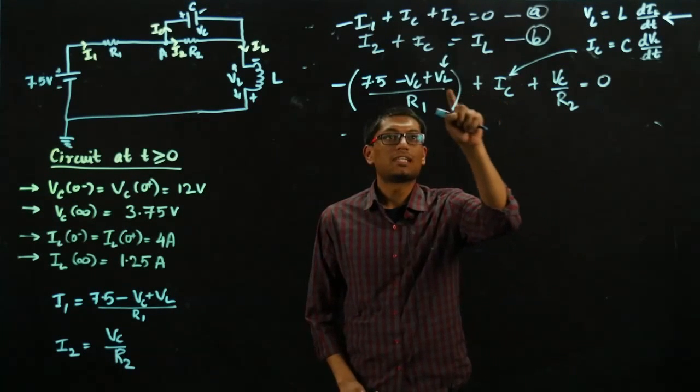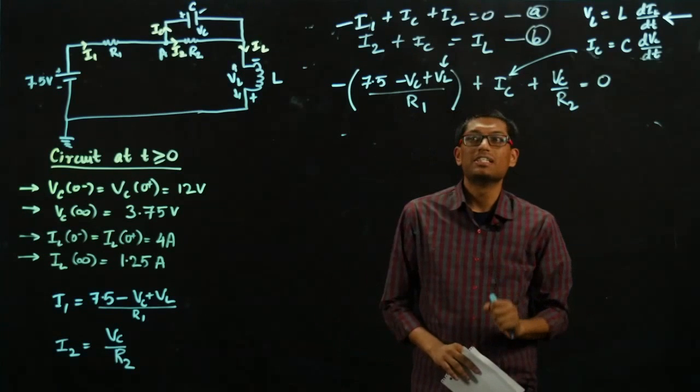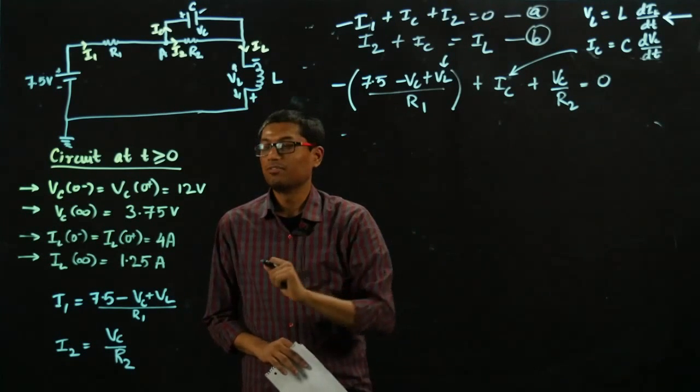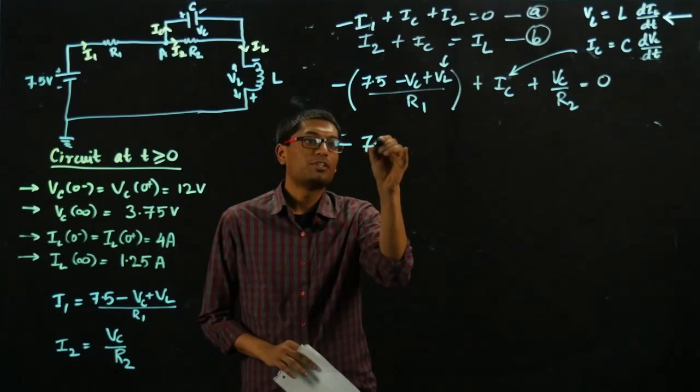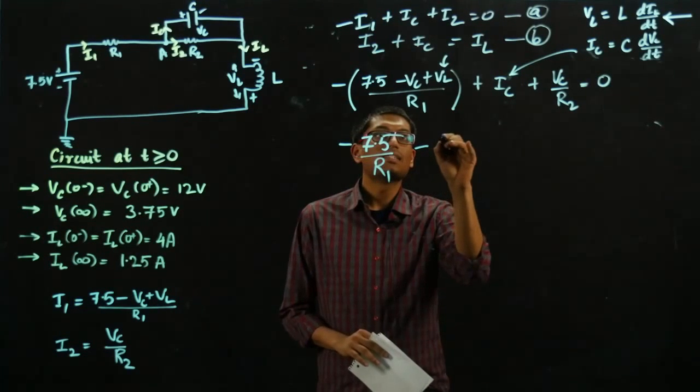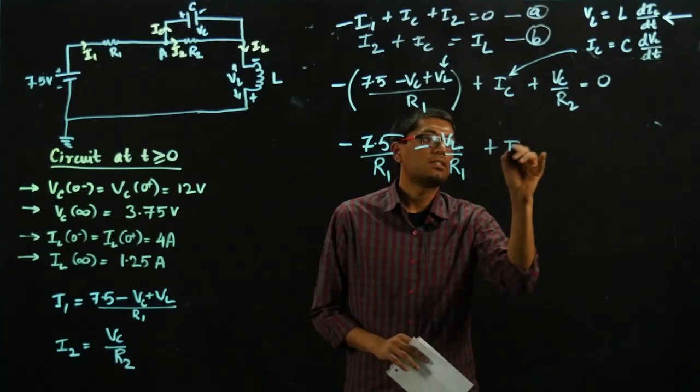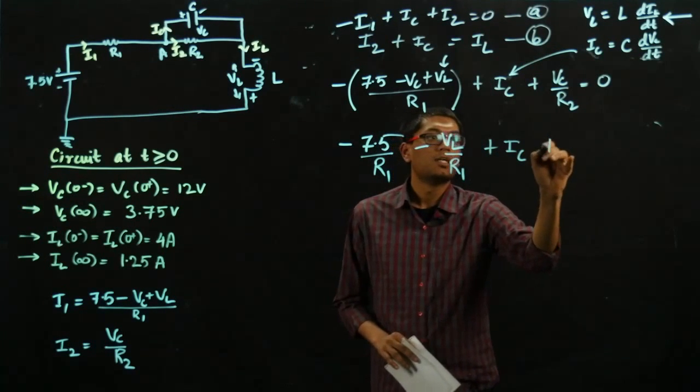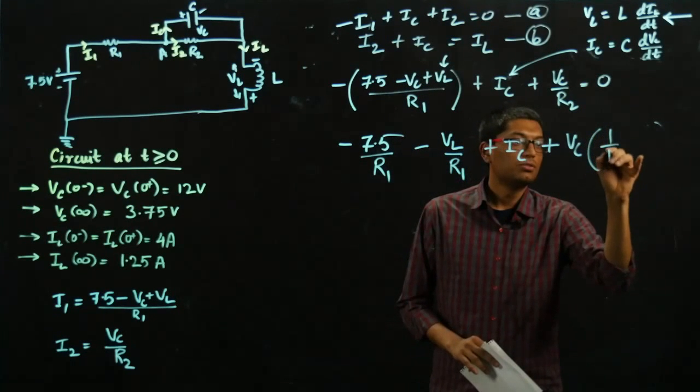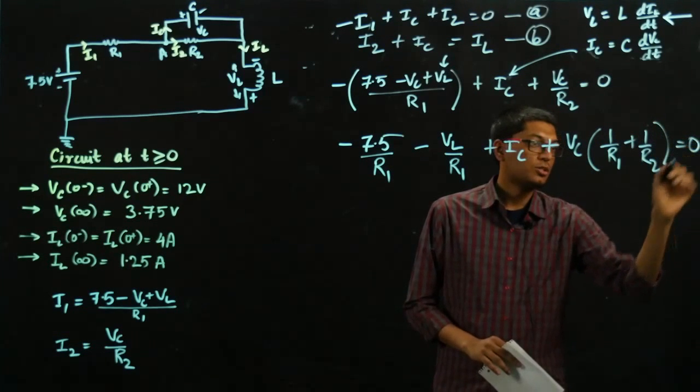So we need to eliminate these variables IC and VL to get a differential equation in terms of the variable VC. So let's simplify this equation. Minus 7.5 over R1 minus VL over R1 plus IC plus VC. We can combine these two terms 1 over R1 plus 1 over R2, all summing to 0.